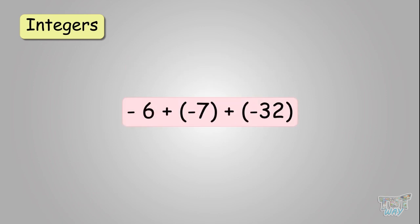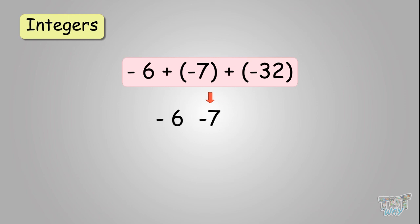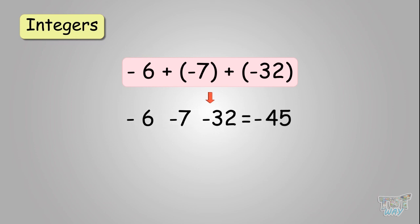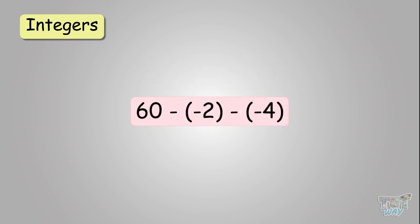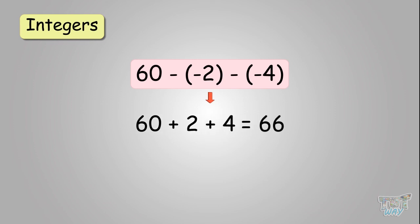Next: minus six plus negative seven plus negative thirty-two. Remove the brackets to get negative six minus seven minus thirty-two. All of these have a negative sign, so you add them to get negative forty-five. Then: sixty minus negative two minus negative four. Open the brackets to get sixty plus two plus four, because two negative signs become a positive sign. Therefore you add to get sixty-six.